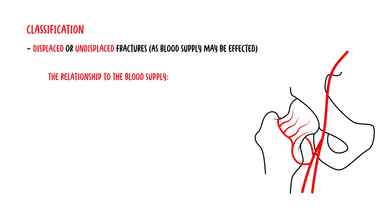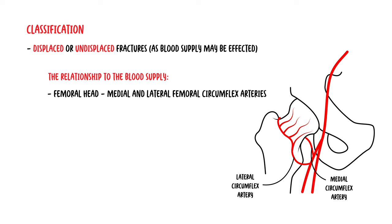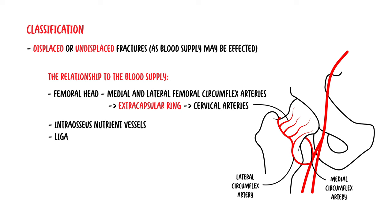It is important to describe fractures as displaced or undisplaced, as blood supply may be affected. The relationship to blood supply is very important. The femoral head receives its supply via the medial and lateral femoral circumflex arteries, which form the extracapsular ring and give rise to the cervical arteries, the lateral being most important. There is also supply via the intraosseous nutrient vessels and the ligamentum teres.